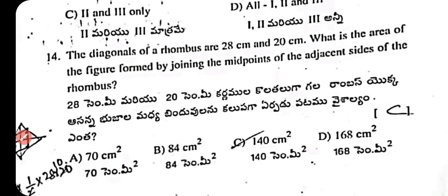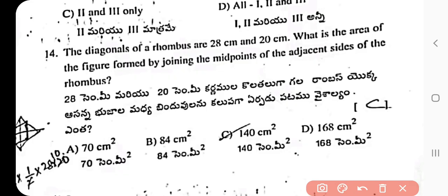Question 14: The diagonals of a rhombus are 28 cm and 20 cm. What is the area of the figure formed by joining the midpoints of adjacent sides? The half-diagonals are 14 cm and 10 cm. Area = 14 × 10 = 140 cm². The right answer is 140 cm².